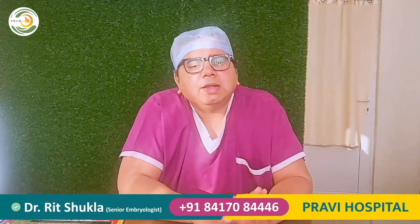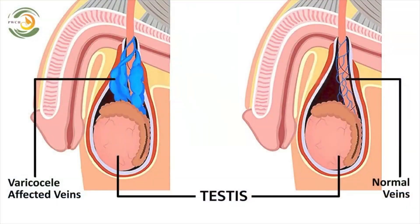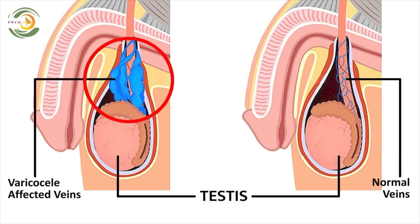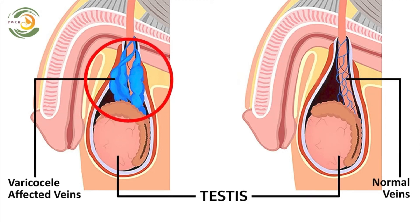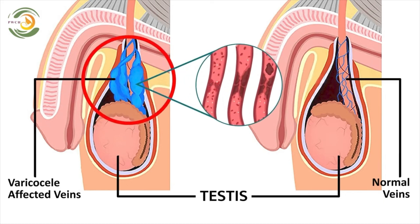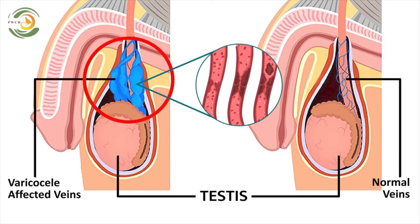The second cause is varicocele, a disease in which the veins of the testicles become enlarged, causing abnormal blood flow and affecting sperm production. If you have this problem, you should consult a urologist or a good doctor.